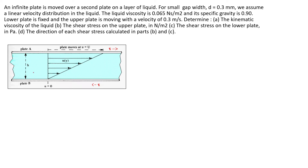You can see plate A and plate B here, and the distance between these plates is given as 0.3 millimeter. In the lower portion the velocity is equal to 0, and the upper plate moves at a velocity U equal to 0.3 meter per second. The liquid viscosity is given as mu equal to 0.065 Newton second per meter square, and the specific gravity of the oil is 0.9.